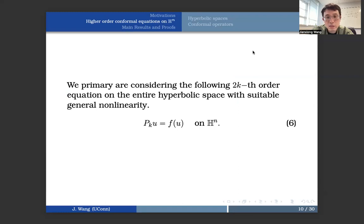let me just present you the primary problem that we are looking at. Basically, we're looking at this 2k-th order equation on the entire hyperbolic space with suitable general non-linearity. The equation looks like this: pKu equals f of u on Hn, and I'll explain what pK is right away.